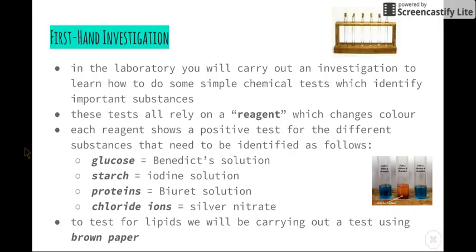So in our first-hand investigation, you will carry out a laboratory investigation to learn how to do some simple chemical tests which identify these important substances that we've just mentioned. These tests will rely on a reagent, which is a chemical solution that changes colour. It's sort of like an indicator, but we don't call it an indicator. It's classified as a reagent as it shows a positive test for the different substances, whereas an indicator will test for the same thing but give us a scale of where that particular substance lies on that scale.